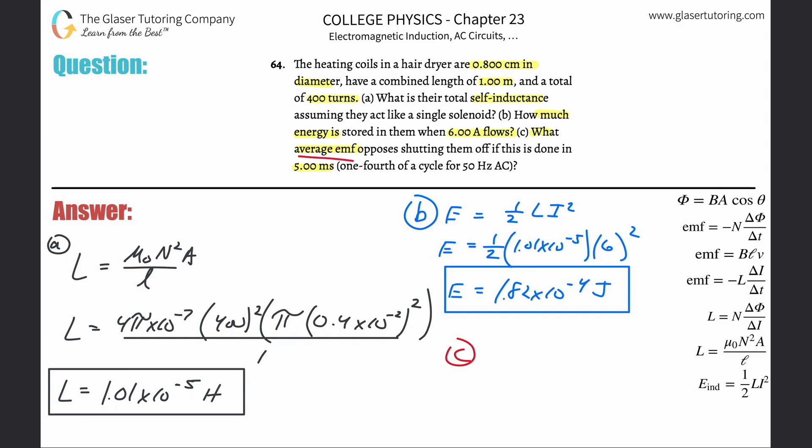Anytime you've got to find average emf, it is this formula: the average emf that is induced that will oppose shutting something off, because the change in current as you shut it off creates its own magnetic field that acts on the wire itself—that's self-inductance.